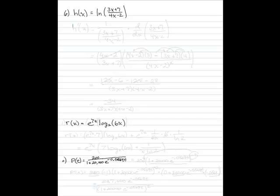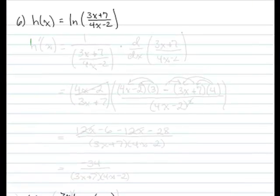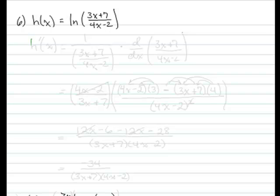So we're going to take the derivative of natural log of 3x plus 7 over 4x minus 2. So our h prime of x, the first thing we'll have is 1 over whatever we're taking the natural log of. 3x plus 7 over 4x minus 2. That's the first half.